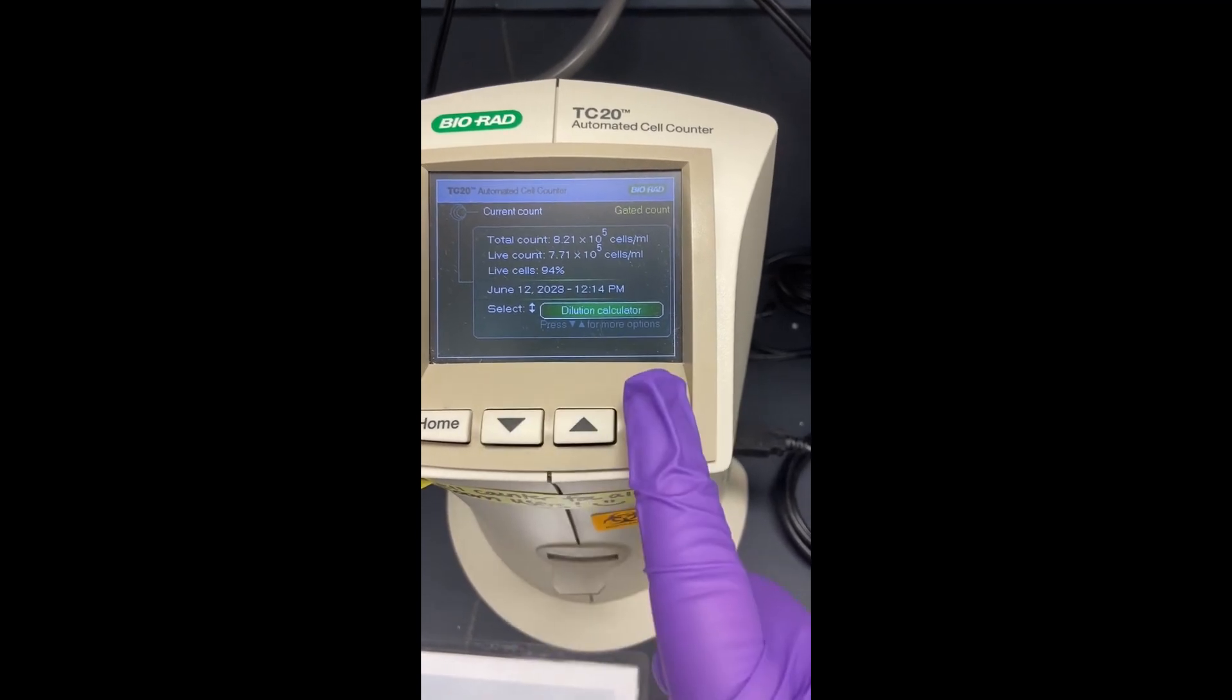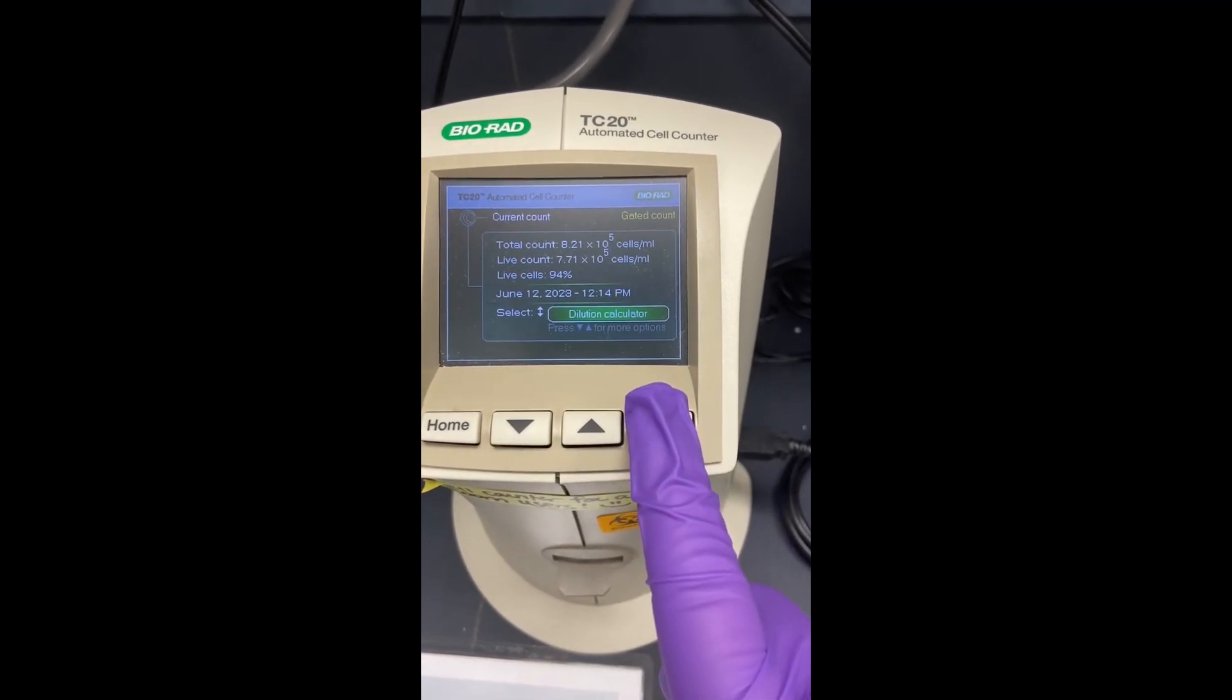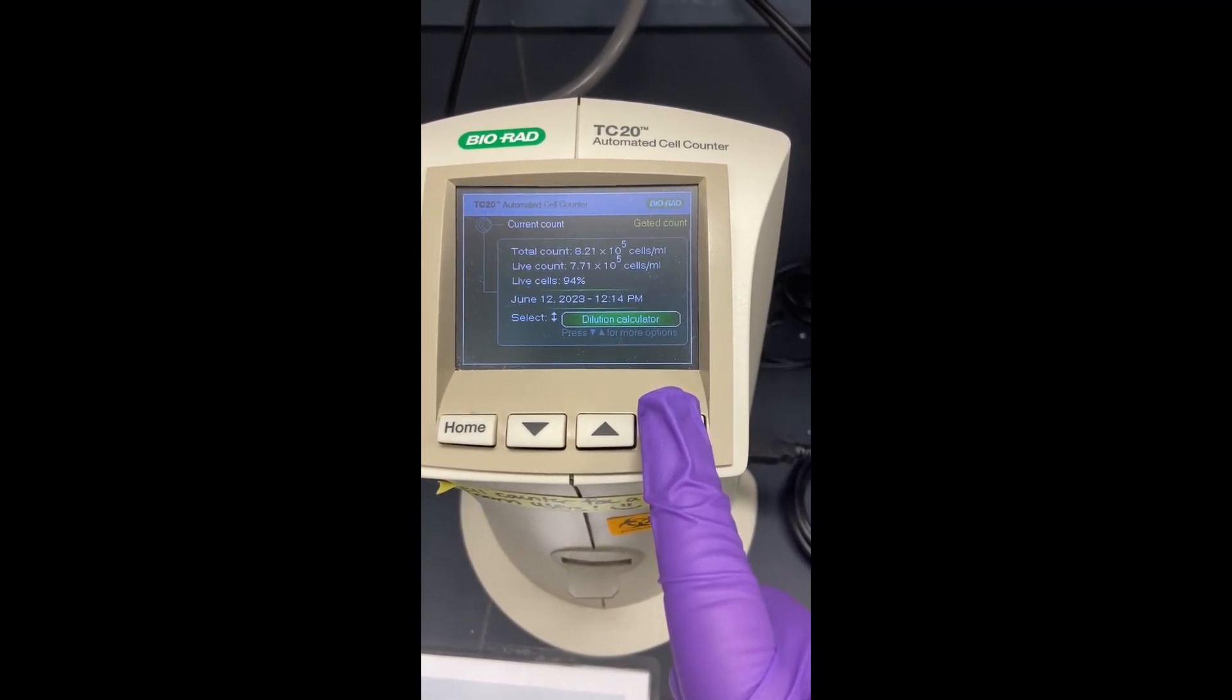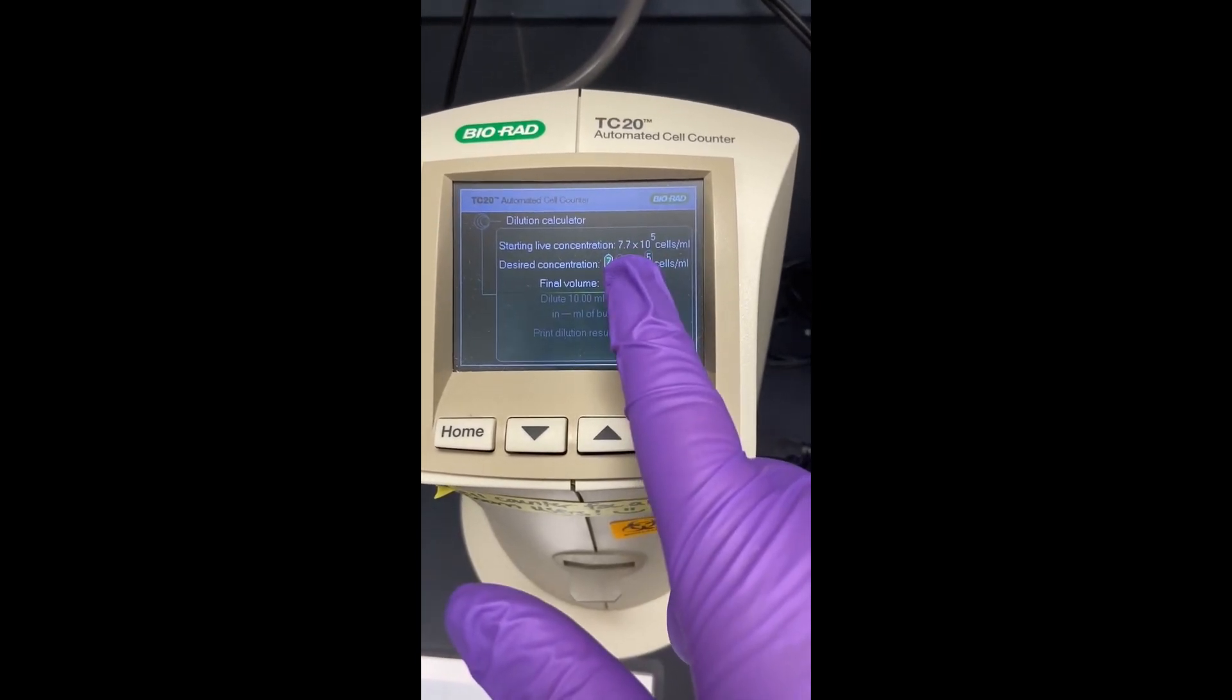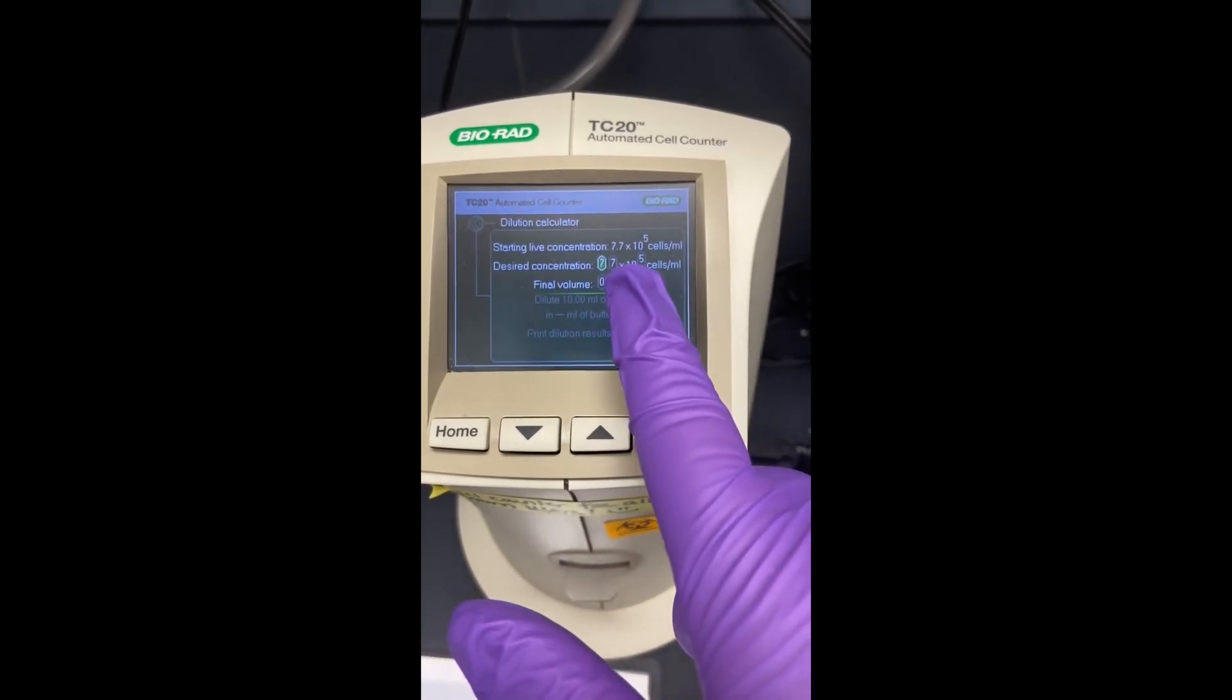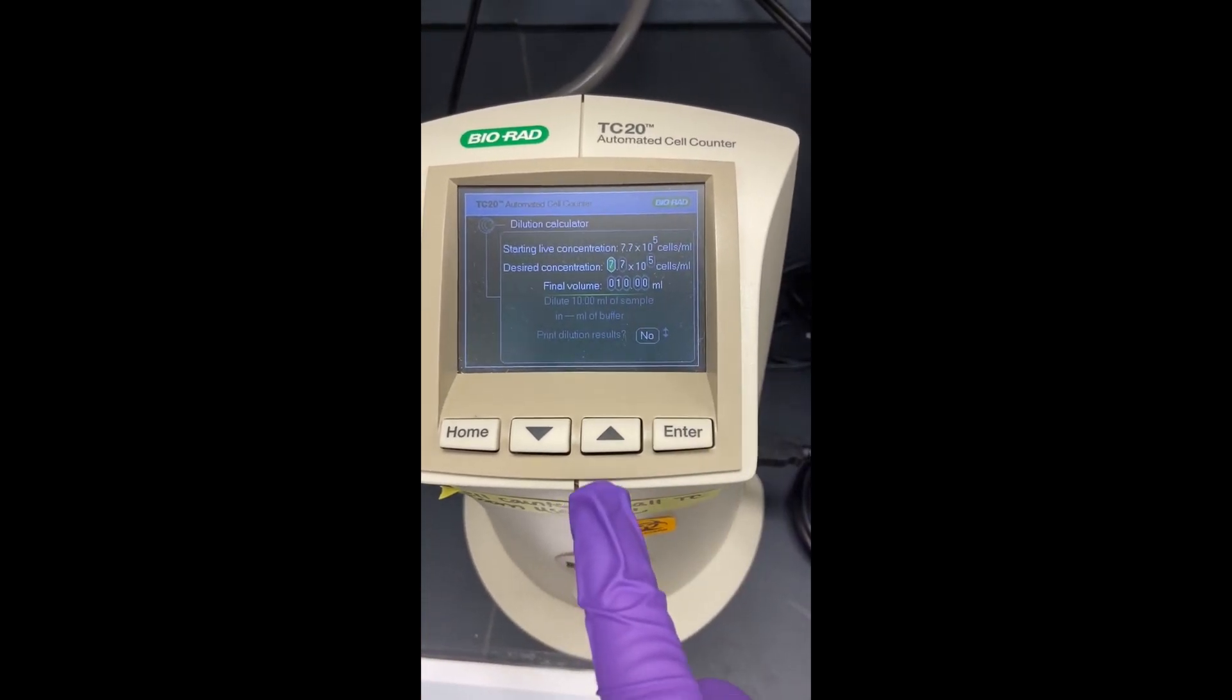But what's most useful, quite honestly, if you're happy with your percentage of live cells, which I am, is your dilution calculator. And so it automatically uses your starting live concentration because usually you want to plate live cells.